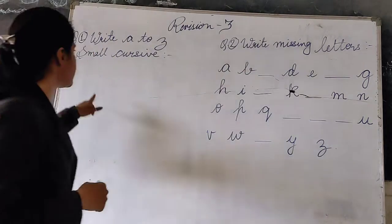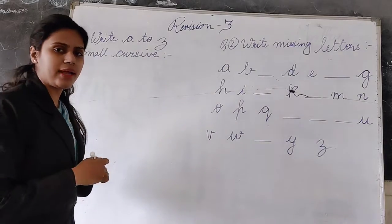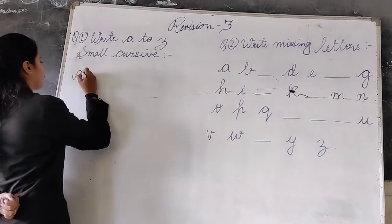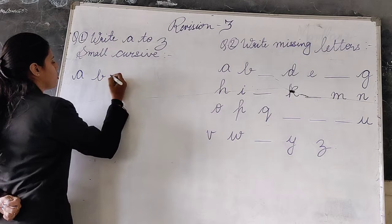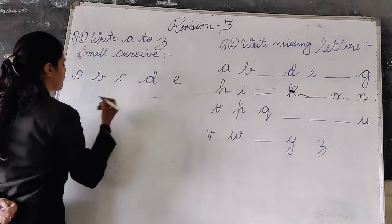So question number 1st is, write A to Z, small cursive. Come on, write neatly. A for apple, B for ball, C for cat, D for dog, E for elephant.